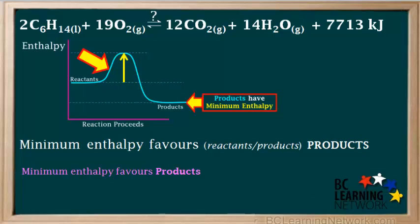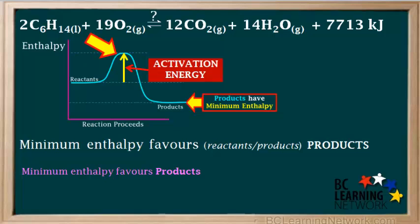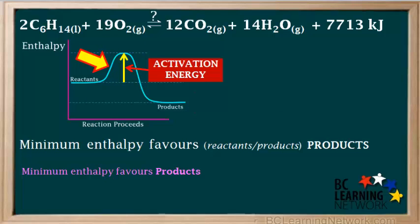We should point out that even though the tendency toward minimum enthalpy favors the products and energy is released to the surroundings, exothermic reactions still require an initial input of energy to get started. The reactants must have enough kinetic energy to make it over the activation energy barrier shown in the graph. When we predict that products are favored, we are assuming reactants possess the required activation energy to start the reaction.